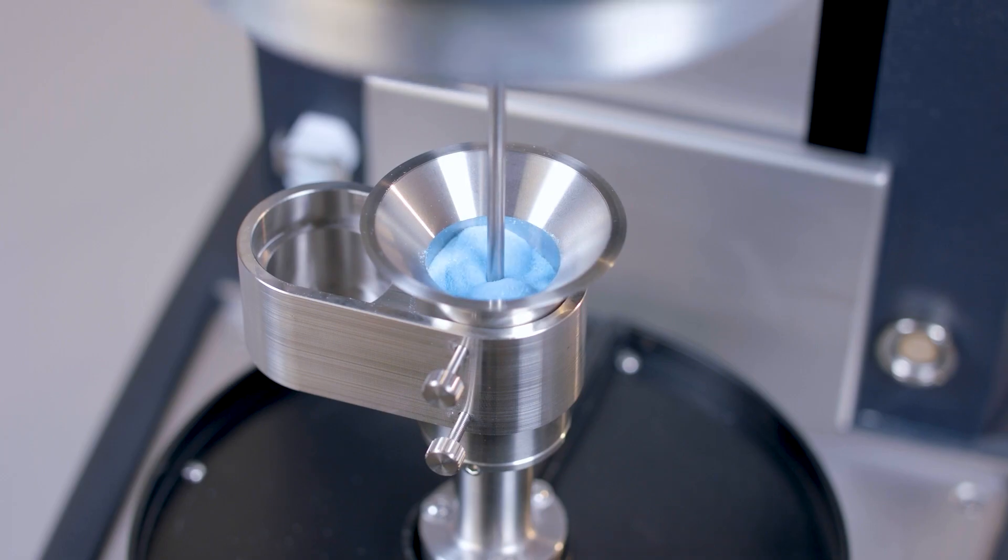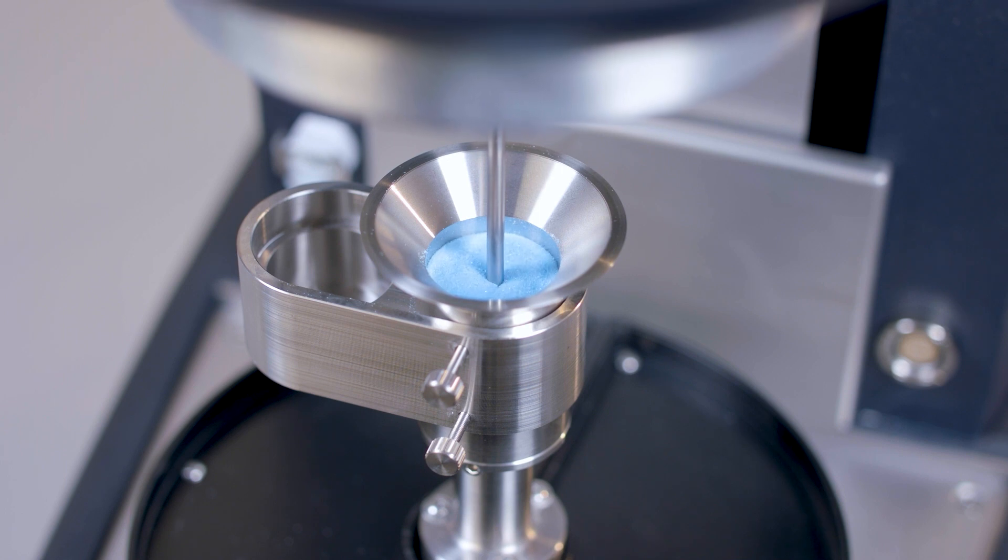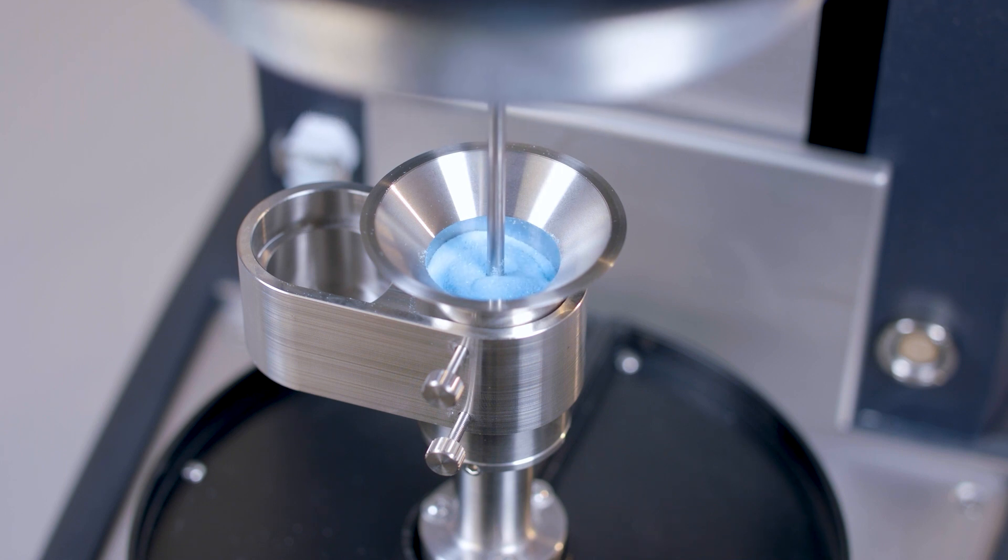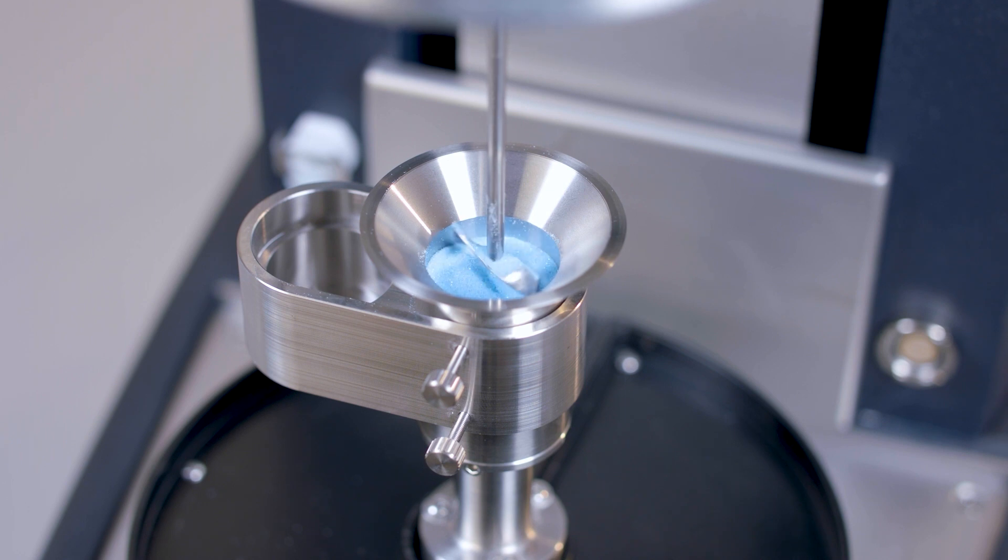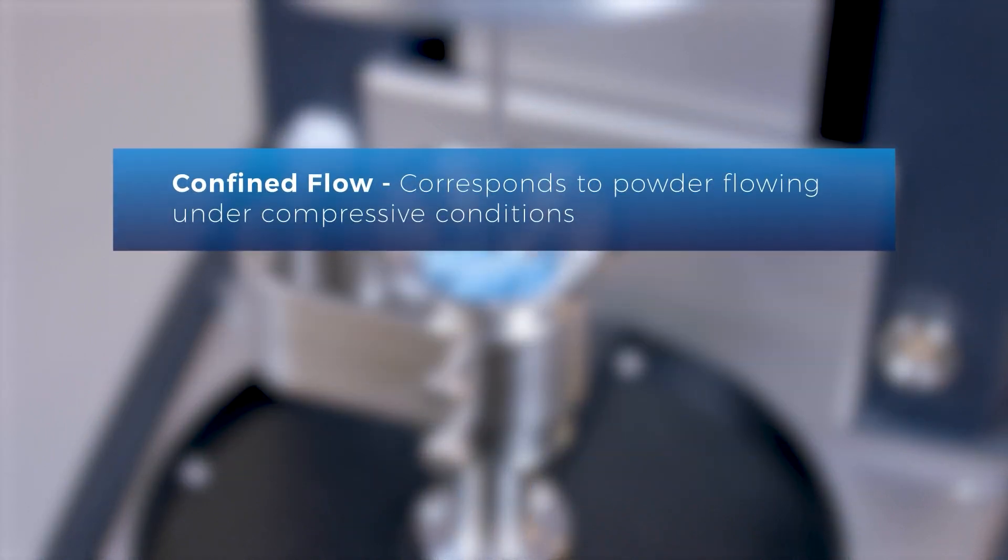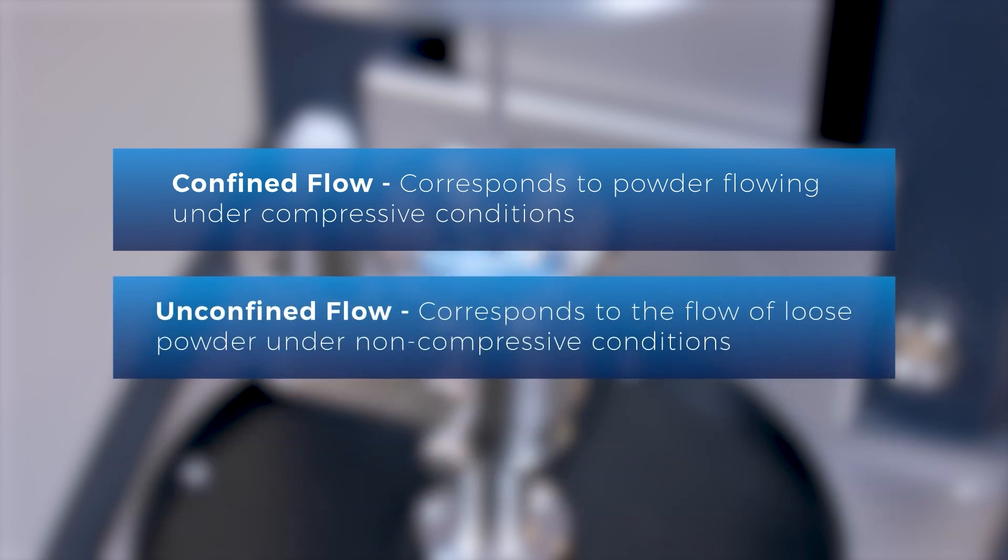The powder flow cell is used for flow testing, which measures the bulk behavior of powder in motion. Confined and unconfined flow are both measured. Confined flow corresponds to powder flowing under compressive conditions and unconfined flow corresponds to the flow of loose powder under non-compressive conditions.